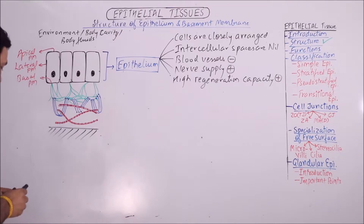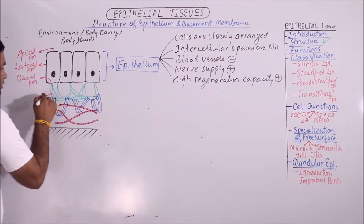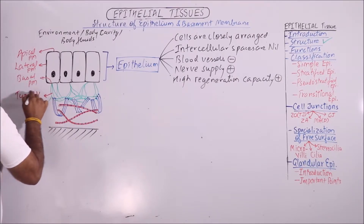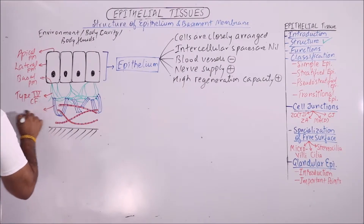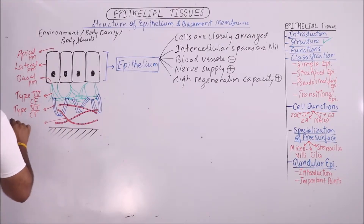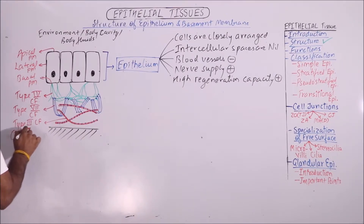This is all about the epithelia. These are type 4 collagen fibers, these are type 7 collagen fibers, and these are type 3 collagen fibers, which are also known as reticular fibers.